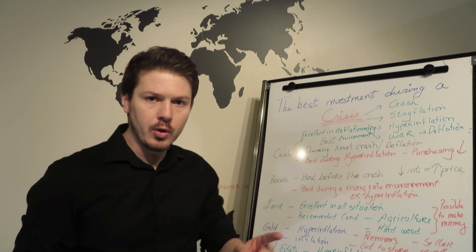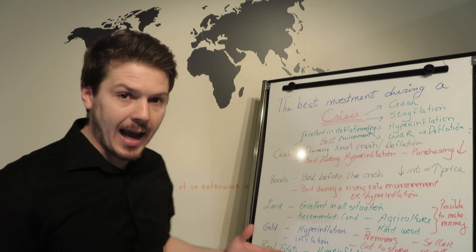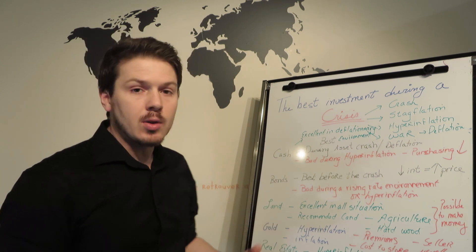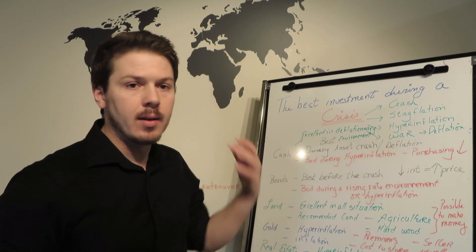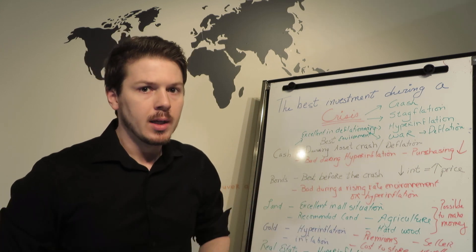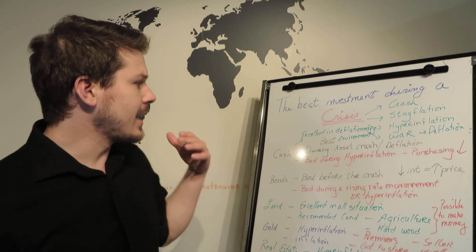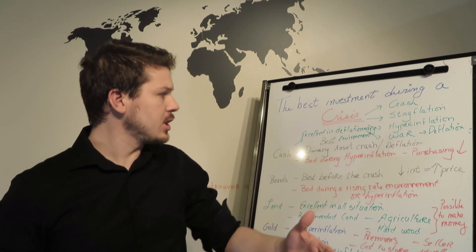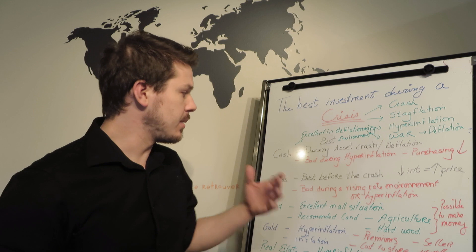So first, the first asset class is cash. It's excellent when it's deflation, when everything is going down in value, cash is excellent because you're making money to keep your money. During an asset crash deflation, then it is the best.